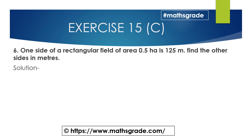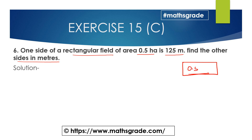Question number 6: one side of a rectangular field of area 0.5 hectares is 125 metres. Find the other side in metres. This is the rectangular field. Area is 0.5 hectares and one side — the length — is 125 metres. Opposite sides are equal, so the other length is also 125 metres.